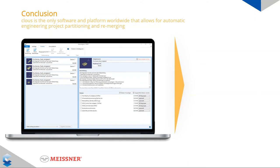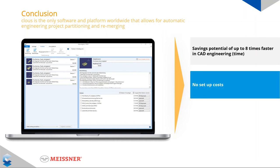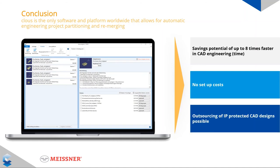In conclusion: we could speed up the CAD design eight times faster through parallelization. There are no setup costs, the software is easy to install, there is no change management process, and engineers can just download and start. IP-protected outsourcing of CAD design is now possible in the easiest and safest way available today.